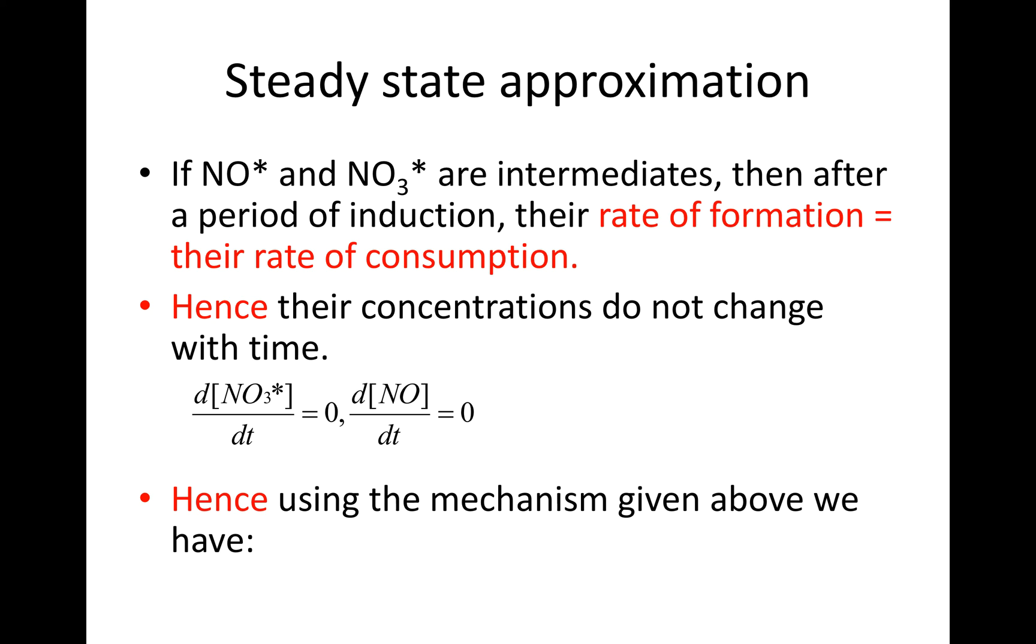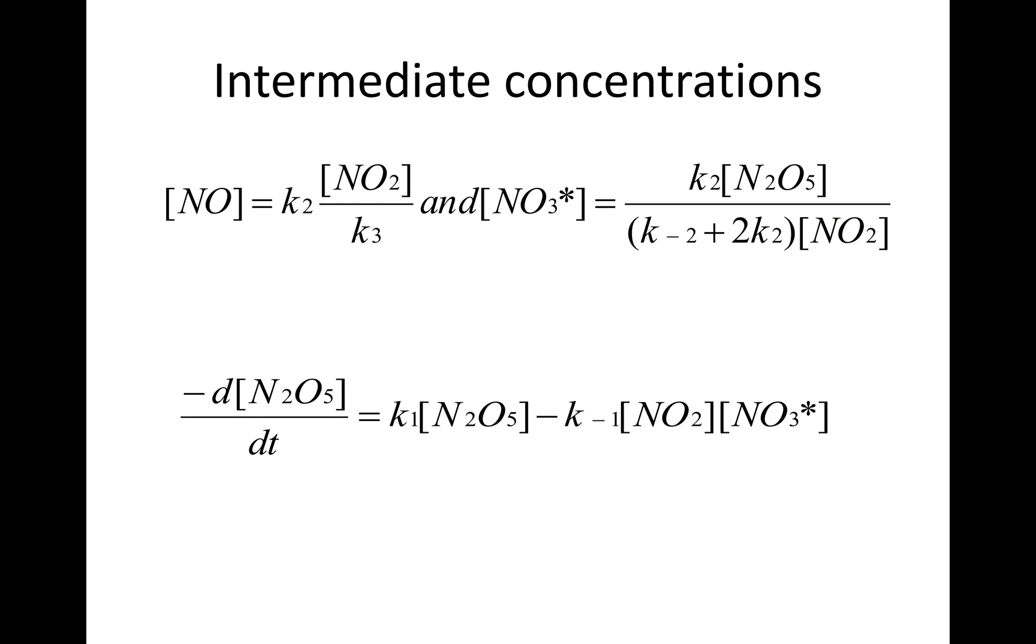We can then use this in the mechanism above and obtain expressions for the two intermediates. This is what we do. [NO*] = k₂[NO₂]/k₃ and